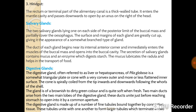The two salivary glands lie one on each side of the posterior limit of the buccal mass and partially cover the esophagus. The margins of each gland are greatly cut up, giving it the appearance of a somewhat branched type of gland. The duct of each gland begins near its internal anterior corner, immediately enters the muscles of the buccal mass, and opens into the buccal cavity. The secretions of the salivary gland contain mucus and enzymes which digest starch from the food. The mucus lubricates the radula and helps transport the food.